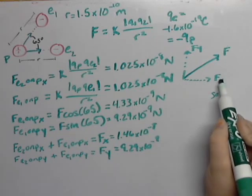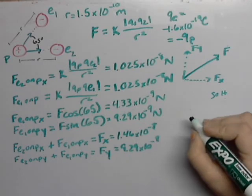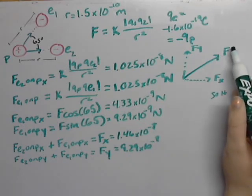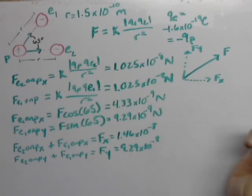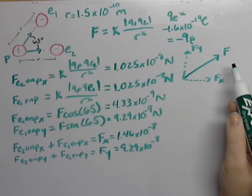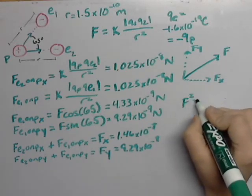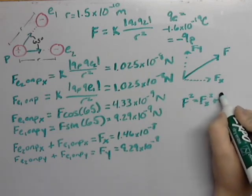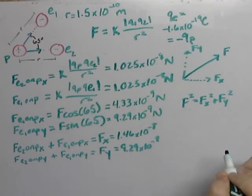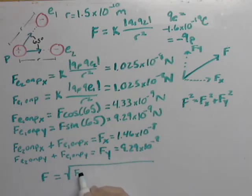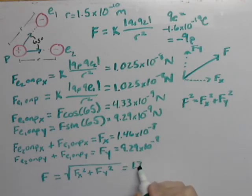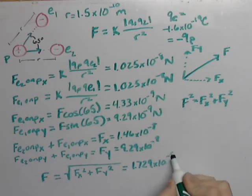So now we have this value and we have this value. We want this value, this is f total. We can go back to our Pythagorean rules, where f squared is equal to fx squared plus fy squared. So f total net is going to equal the square root of f of x squared plus f of y squared. And when you plug that into your calculator, you're going to get 1.729 times 10 to the negative eight newtons.